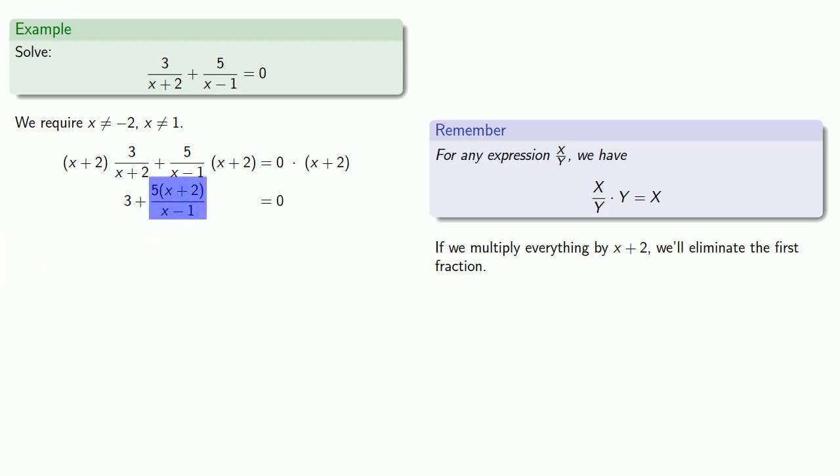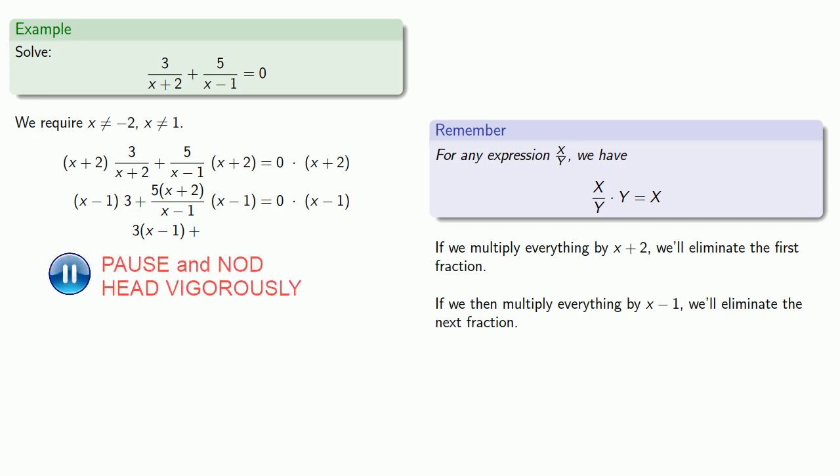Now, we still have this rational expression here, but if we multiply everything by x minus 1, we'll eliminate the next fraction. So we'll multiply every term by x minus 1. The first term becomes 3 times x minus 1. The second term, the common factor of x minus 1 will be removed, leaving us with 5 times x plus 2. And on the right-hand side, we have 0 times something, which is going to give us 0. And now we have a much simpler equation to solve.